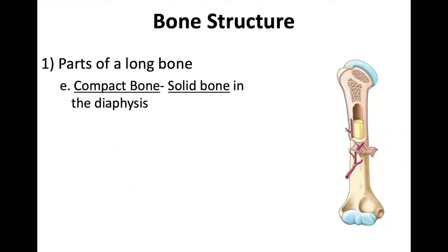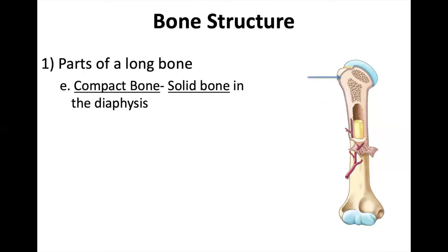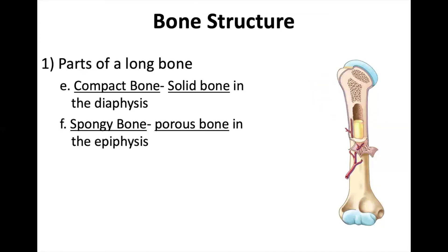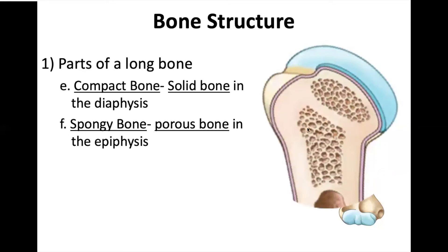Compact bone. Now I'm actually starting to talk about bone material, not just locations. Compact bone is this solid part. If you look closely at this bone, you have this smooth area and you have this spongy-looking pocked area. Compact bone is this smooth area that is strong, tough, can support your weight — that is what is going to allow you to stand up straight.